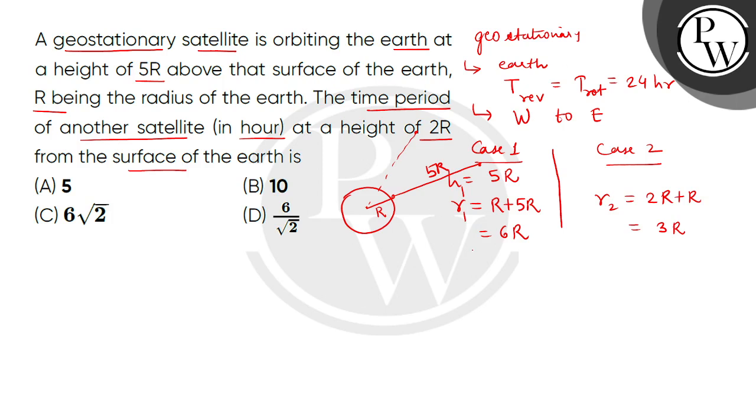Now because the first satellite is geostationary, so in this case the time period will be definitely 24 hours, and we have to find the time period for the second satellite. So here we will use Kepler's third law of planetary motion, which states that T2 divided by T1 whole squared equals R2 divided by R1 whole cubed.